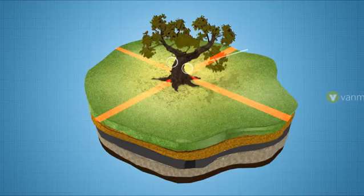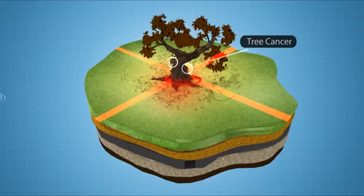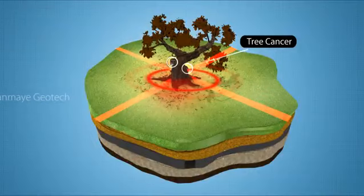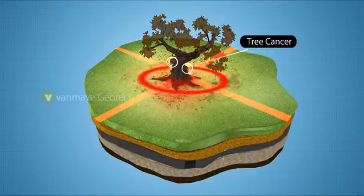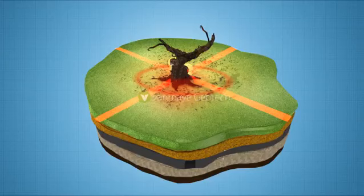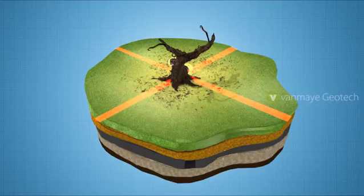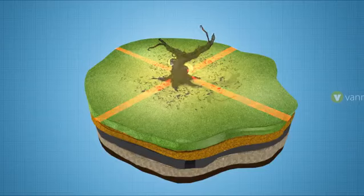If geopathic lines pass under vegetation, the effects will be as follows. Owing to the influence of geopathic lines, there is abnormal growth in tree trunks and the trees become unproductive. Such trees may get cancer and show abnormal growth, particularly on geopathic zones.